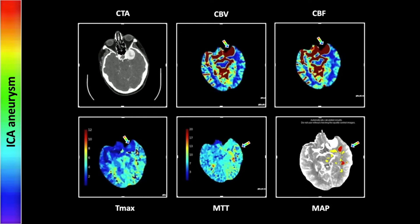Our next case is an internal carotid artery aneurysm at the carotid apex on the left. On the CTA, you can easily appreciate that swirling, somewhat delayed filling of a large, well-circumscribed mass in the region of the carotid apex. That is registering on the CBV and CBF as increased volume and flow. But on the Tmax and the MTT, we see relatively extensive asymmetry involving almost the entirety of the left hemisphere, with a depressed Tmax in the aneurysm region and an increased Tmax and mean transit time in the rest of the left hemisphere, consistent with ischemia.